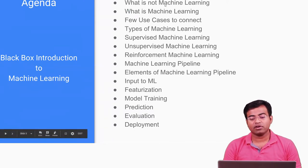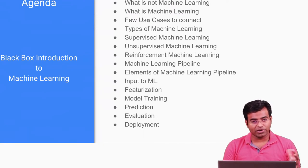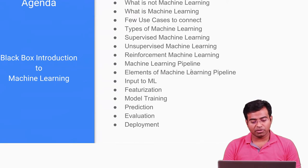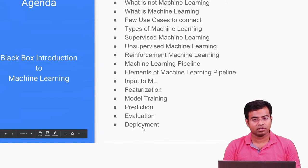What we'll understand is: first, what is not machine learning; what is machine learning; a few use cases so that we can understand what it's about; types of machine learning — supervised, unsupervised, reinforced; what is the machine learning pipeline; elements of the pipeline — input to machine learning, featurization, model training, prediction, evaluation, and finally deployment.